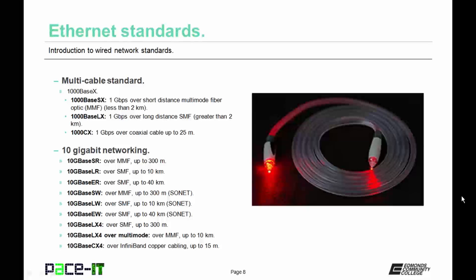Now let's talk about 10 gigabit networking. First up, there's 10GBaseSR over multimode fiber, good for up to 300 meters. Then there's 10GBaseLR over single-mode fiber, good for up to 10 kilometers. Then we have 10GBaseER over single-mode fiber, good for up to 40 kilometers. Then we have 10GBaseSW, which runs over MMF, good for up to 300 meters, and is used on a wide area network.